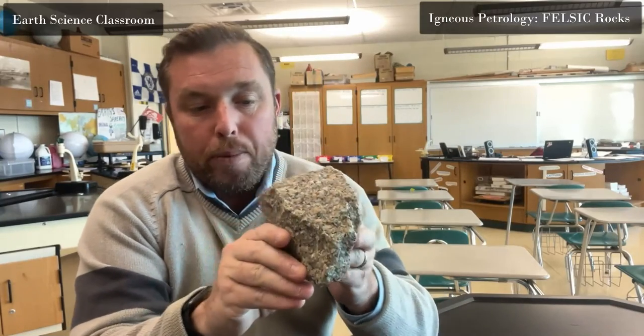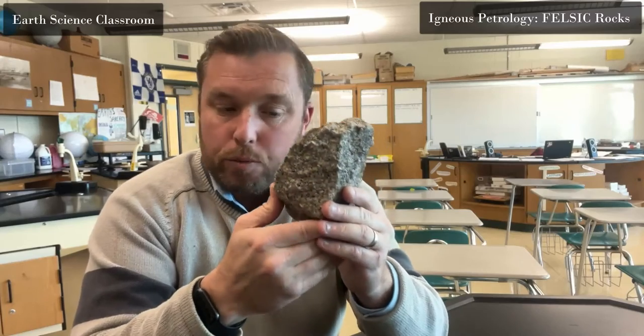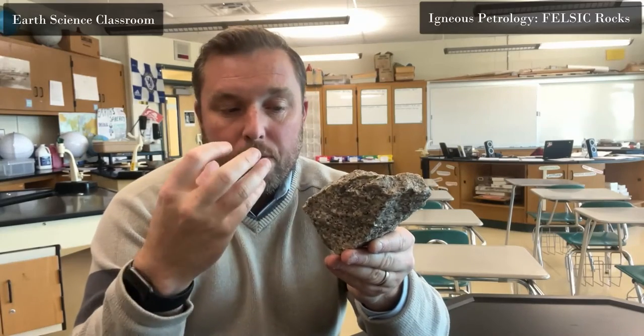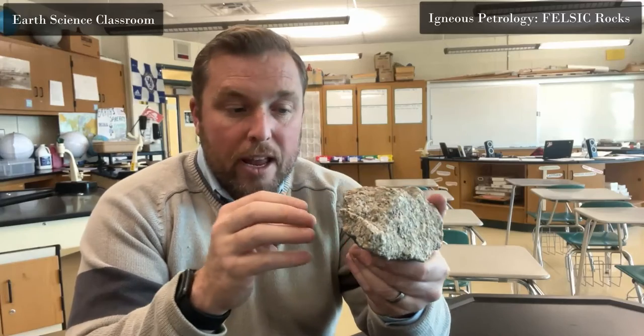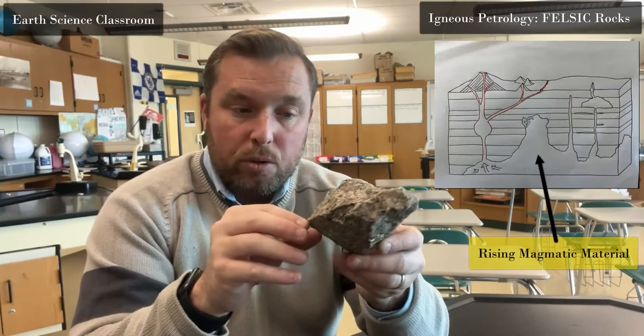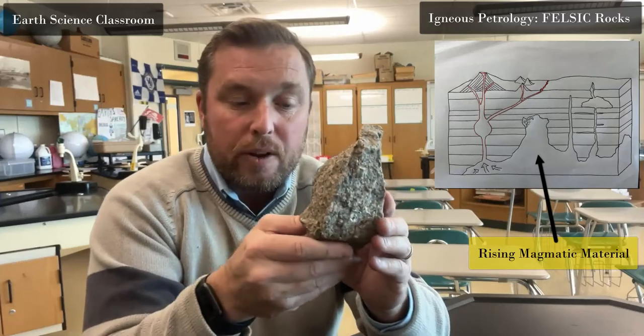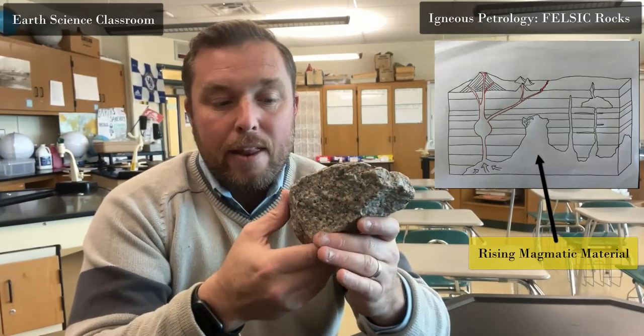This is the earth science classroom — welcome back to the channel. We're looking at petrology and igneous rocks. I've got this beautiful piece of granite right here. Granite is a classic igneous rock that forms a lot of the continental crust and the bulk of the continents. It gives a great view of the visible crystals and minerals inside, so we can tell a lot about the composition, formation, and history of an area from it.